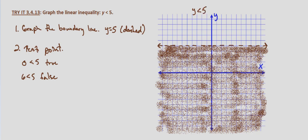It's shaded below the line, the horizontal line y equals 5. The line is dashed because it's a non-inclusive inequality.